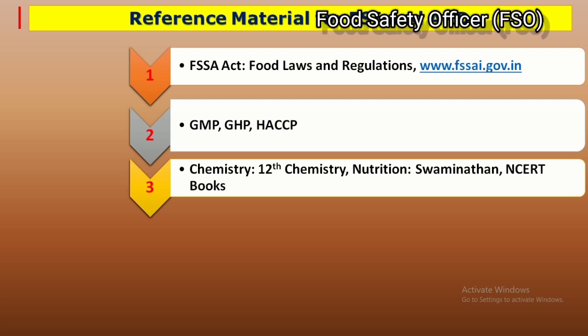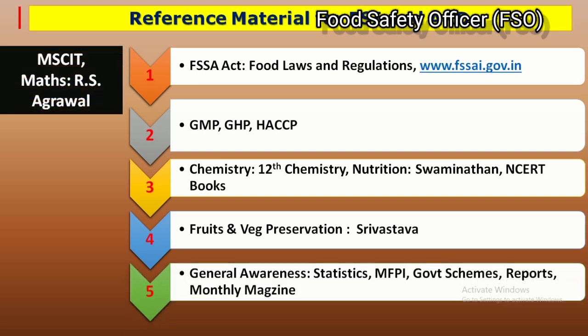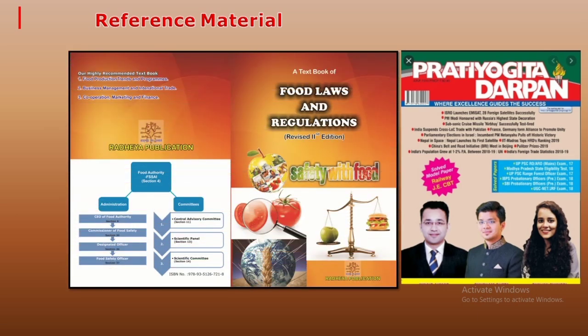For fruits and vegetable preservation, the book by Srivastava covers all preservation techniques and is definitely useful. For general awareness, cover different ministries like MFPI, APEDA, National Horticulture Board, government schemes, budgets, reports, and monthly magazines. For the computer section, MSCIT is important. The book 'PD Food Laws and Regulations,' written by the presenter himself, is also a key reference.